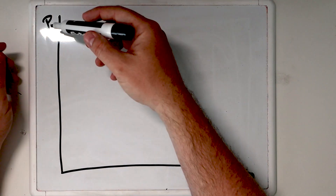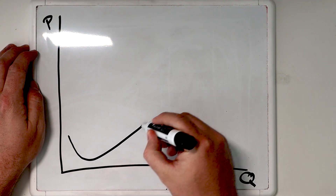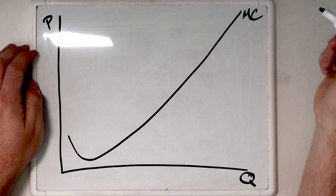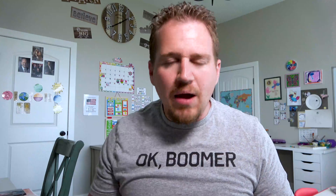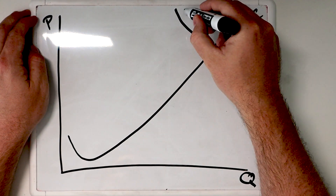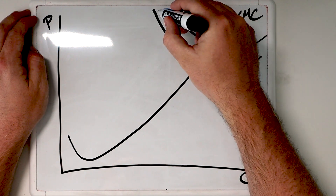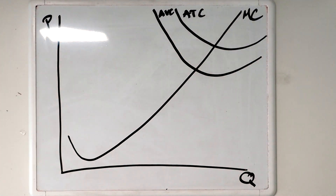We're going to start with the axes — always make sure you're labeling your axes. We have price on one axis and quantity on the other. We're going to have a marginal cost curve that looks like a Nike swoosh. Then we have marginal cost, and we also need average total cost and average variable cost.